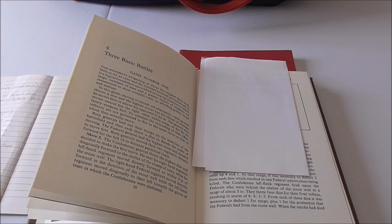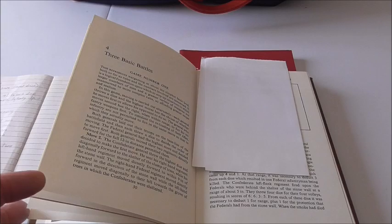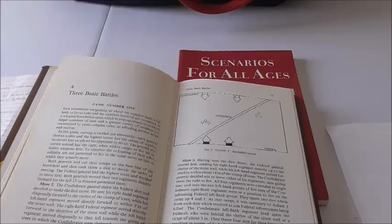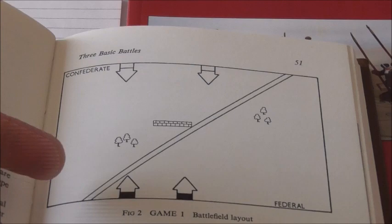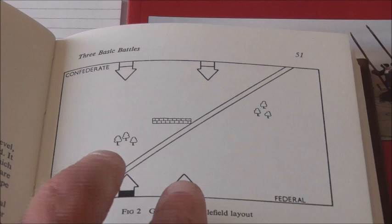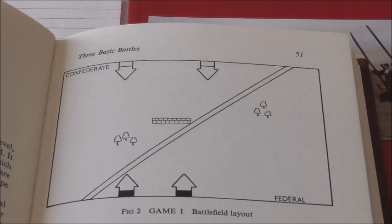I shall just change his measurements from inches to centimetres, so we'll have no problems there. What he did in the book was he laid out the battlefield — hopefully you can see this quite well. It's a very simple battlefield: we've got a road running diagonally across, a small wall here, and two copses of trees. Two Federal infantry regiments come in at the bottom and two Confederate infantry regiments from the top.